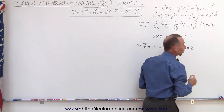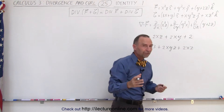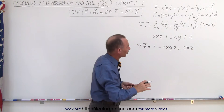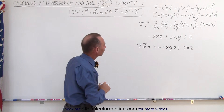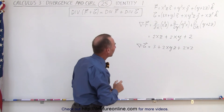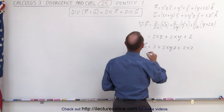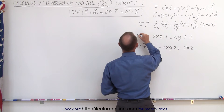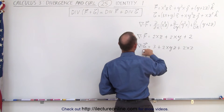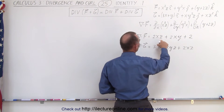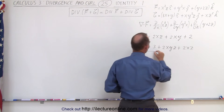Remember, when you take the partial derivative with respect to z, all of the other variables are simply considered to be constants. So now what we're going to do is: we have the divergence of f, we have the divergence of g, and we're going to add those together.